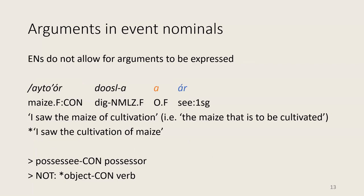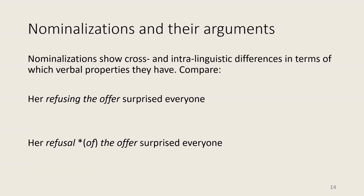With that in mind, looking back at our example, we see a noun with construct state followed by an event nominal. This configuration can only be interpreted as a possessive construction — 'the maze of the cultivation,' meaning 'the maze that is to be cultivated.' It cannot mean 'the cultivation of maze.' So the event nominals cannot license objects. This is not strange or unique to Iraku, because it's well known that nominalizations show differences both across languages and within a language in terms of which verbal properties they have, including whether they license arguments or not.